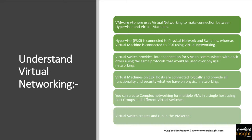To make the connectivity between the hypervisor and virtual machines, you need virtual networking. ESXi is connected to the physical network and switches, whereas virtual machines are connected to ESXi using virtual networking. The virtual switch provides interconnection for VMs to communicate with each other using the same protocols that would be used over physical networking. Virtual machines on ESXi hosts are connected logically and provide all the functionality and security available on physical networking.